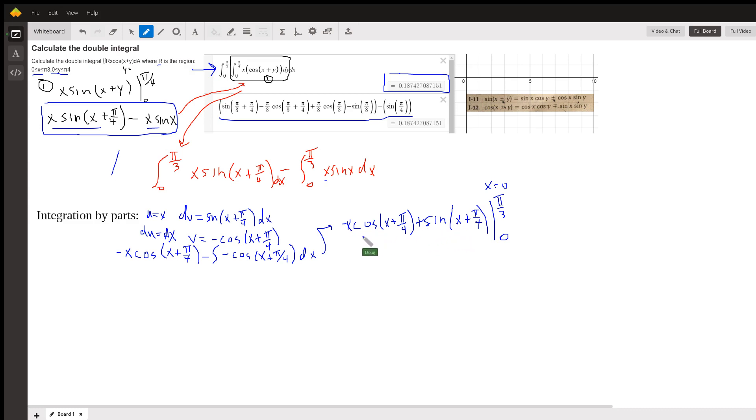Of course, this term will become zero. But if I put zero in here, I'll get minus sine of pi over 4.